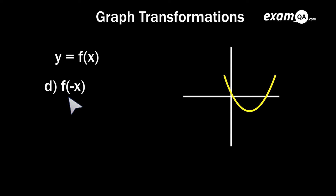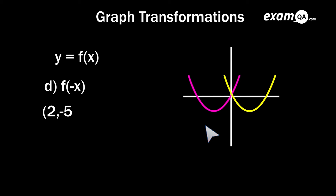The last transformation is f(negative x), which is a reflection in the y-axis. A helpful tip: remember the previous one was a reflection in the x-axis, so when you see this one, it's the other one — a reflection in the y-axis. Students who try to remember both often forget which way around they go. Note that the graph of cos x wasn't used here because a reflection in the y-axis leaves it unchanged. For a coordinate, the x value becomes minus 2 and the y value stays exactly the same.